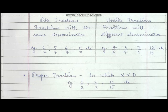Then what are like fractions and unlike fractions? Like fractions are fractions with the same denominator. For example: 2 upon 7, 5 upon 7, 6 upon 7, 11 upon 7. So 7 is common in the denominator — it is the same. So these fractions are called like fractions.